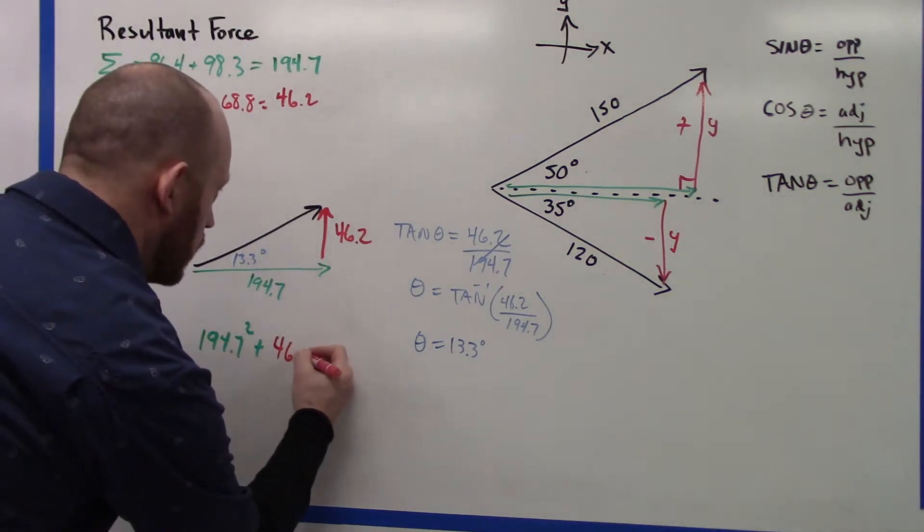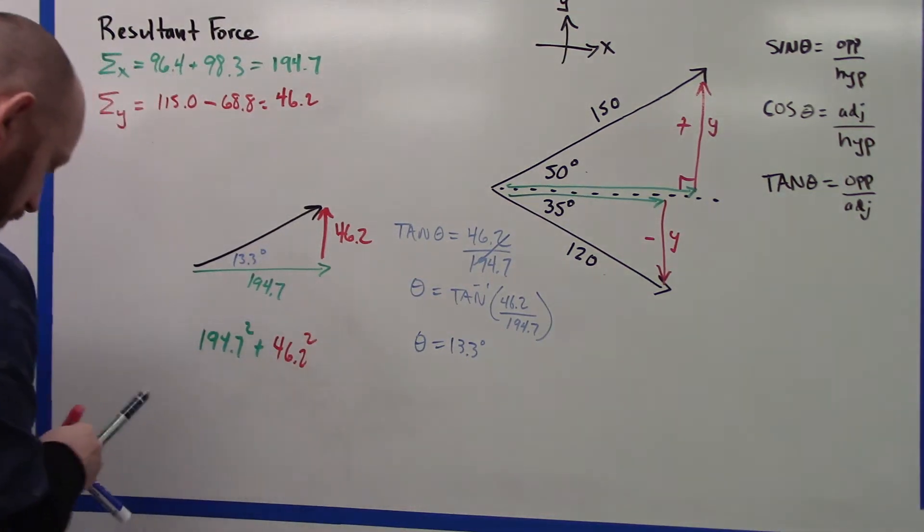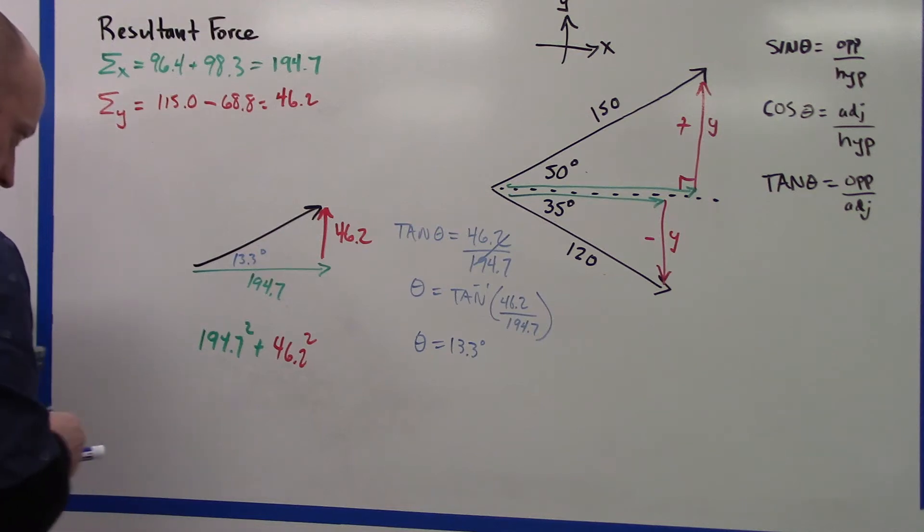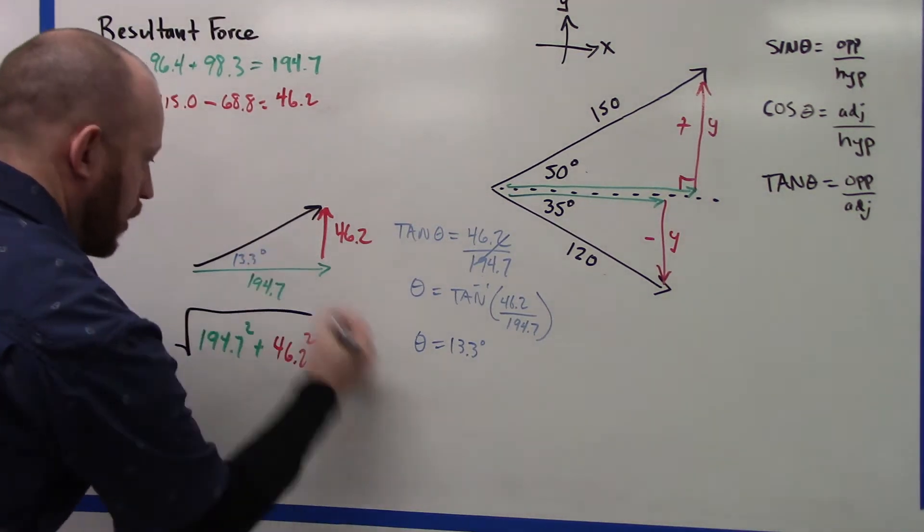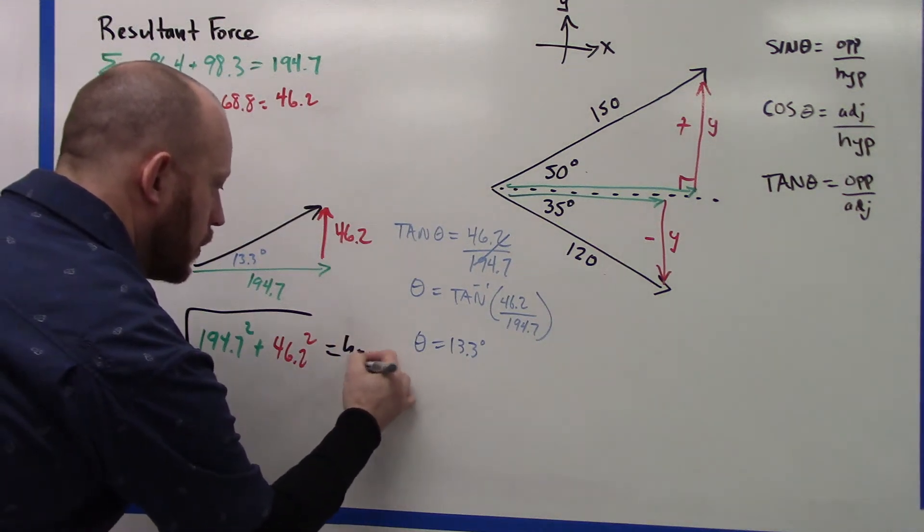So these two squared, square root, would give me my hypotenuse. I could do that.